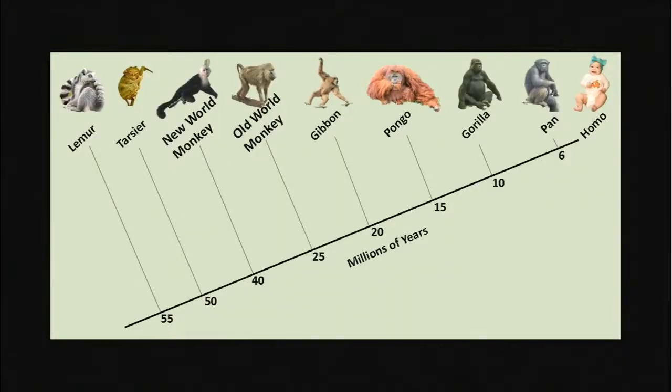Primates can be broken down into two groups: prosimians, which are your lemurs, pottos, lorises, and tarsiers, and everybody else, your anthropoids. Anthropoids include new world monkeys and old world monkeys. New world monkeys are from Mexico, Central and South America, and include capuchins, marmosets, tamarins, and spider monkeys. Approximately 25 million years ago, the old world monkeys diverged and gave rise to macaques, baboons, mandrills, and langurs found throughout Africa and Asia.